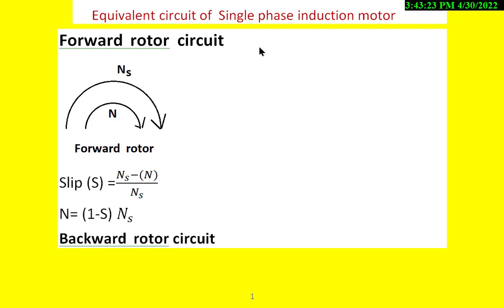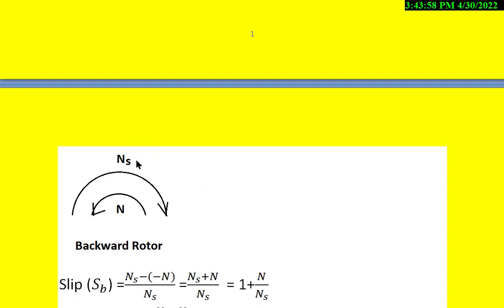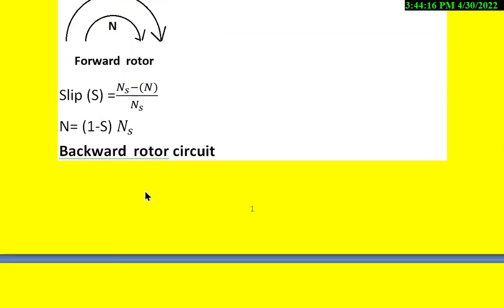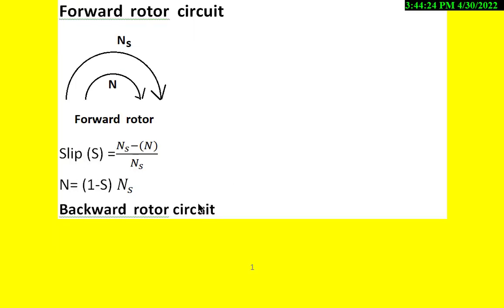As per the double revolving field theory, there are two rotors which will rotate in the opposite direction. One is called the forward rotor circuit, in which the direction of the synchronous speed is clockwise and the rotor speed N is also in the clockwise direction. And there is another rotor called the backward rotor circuit, in which the stator magnetic field or synchronous speed is in the clockwise direction whereas the rotor direction is in the anticlockwise direction. Keeping these directions in mind, we calculate what is slip for the forward rotor circuit and similarly for the backward rotor circuit.